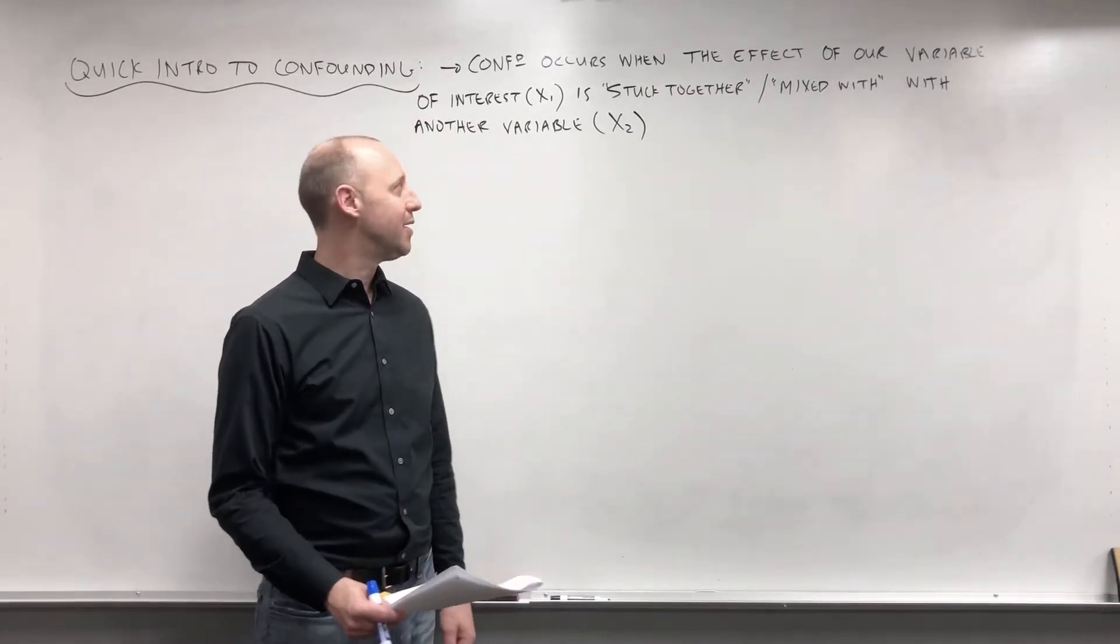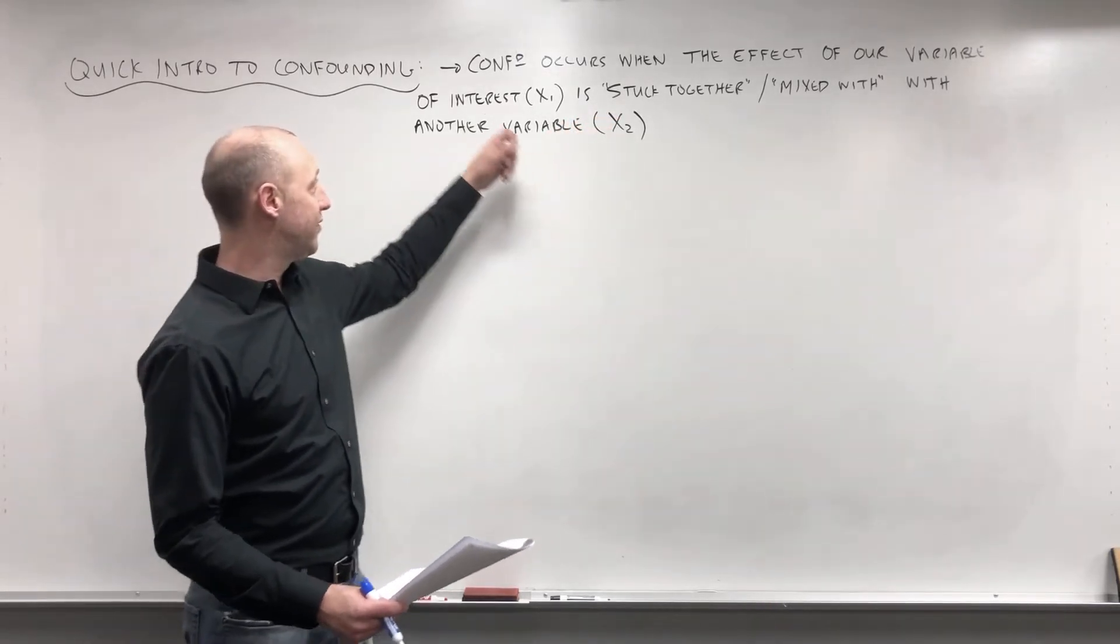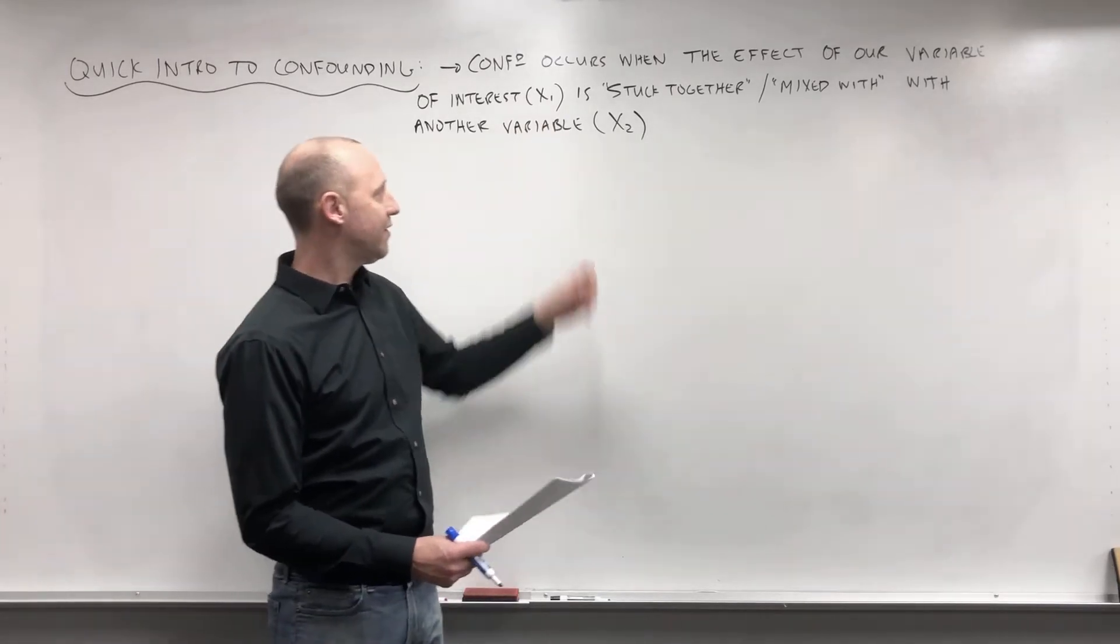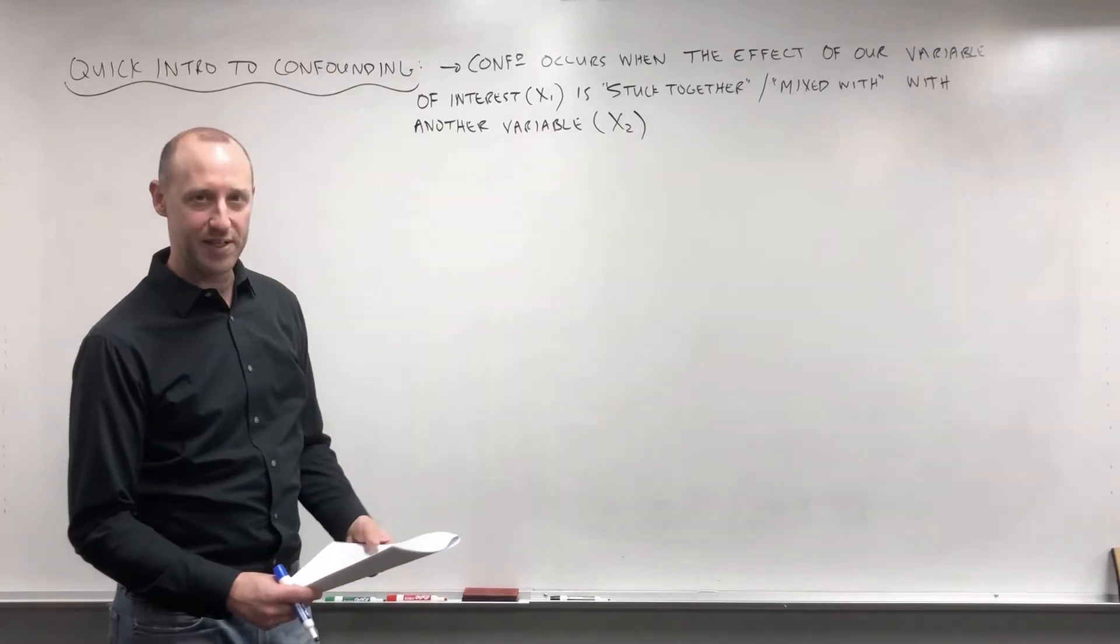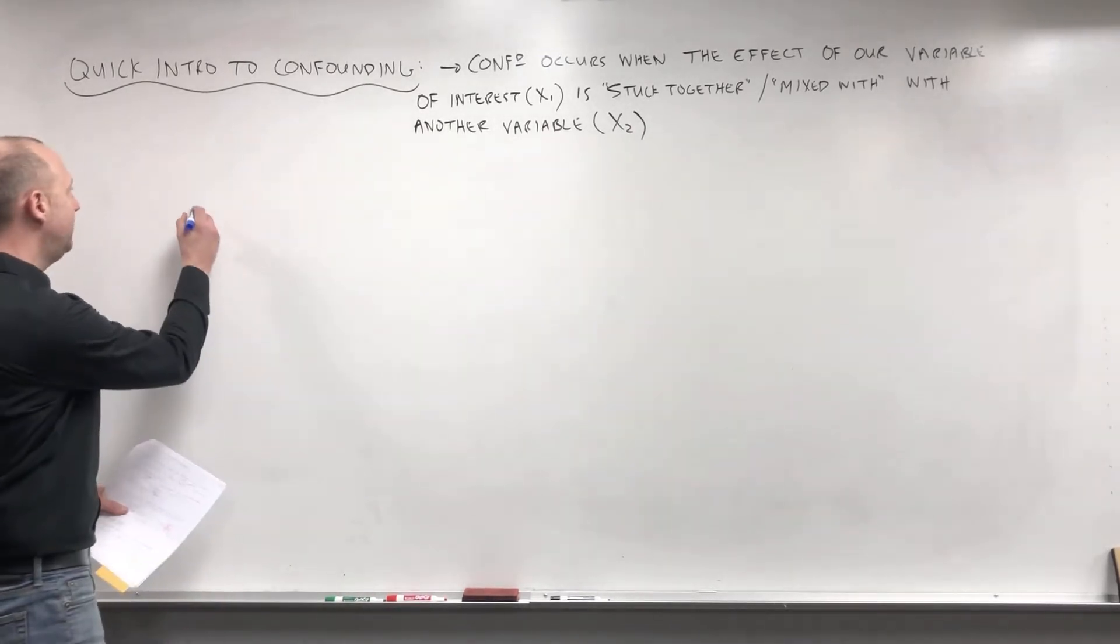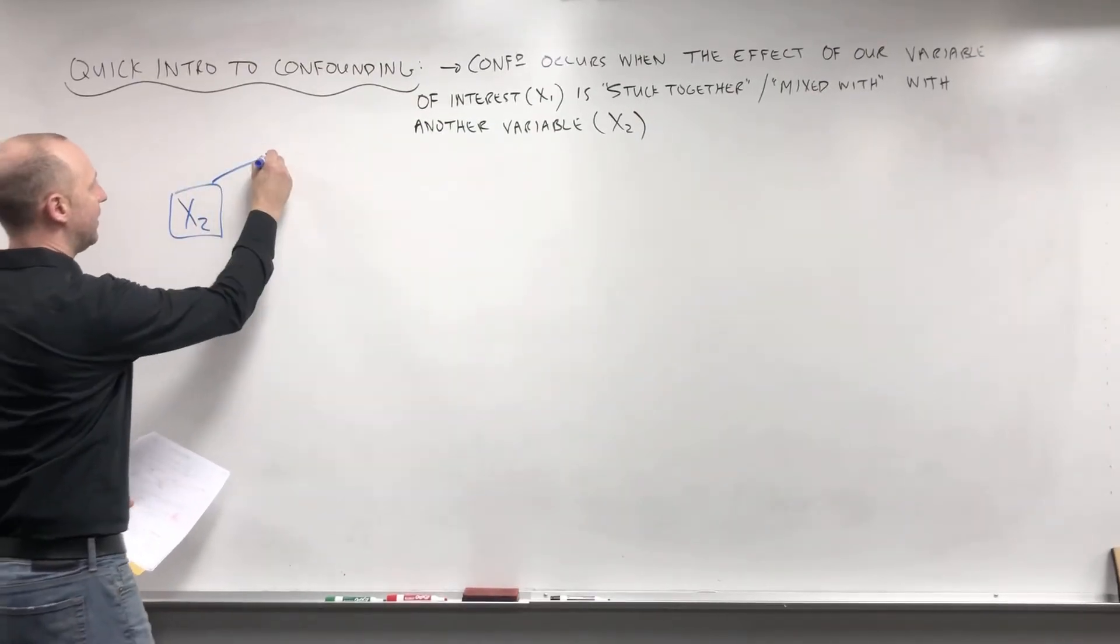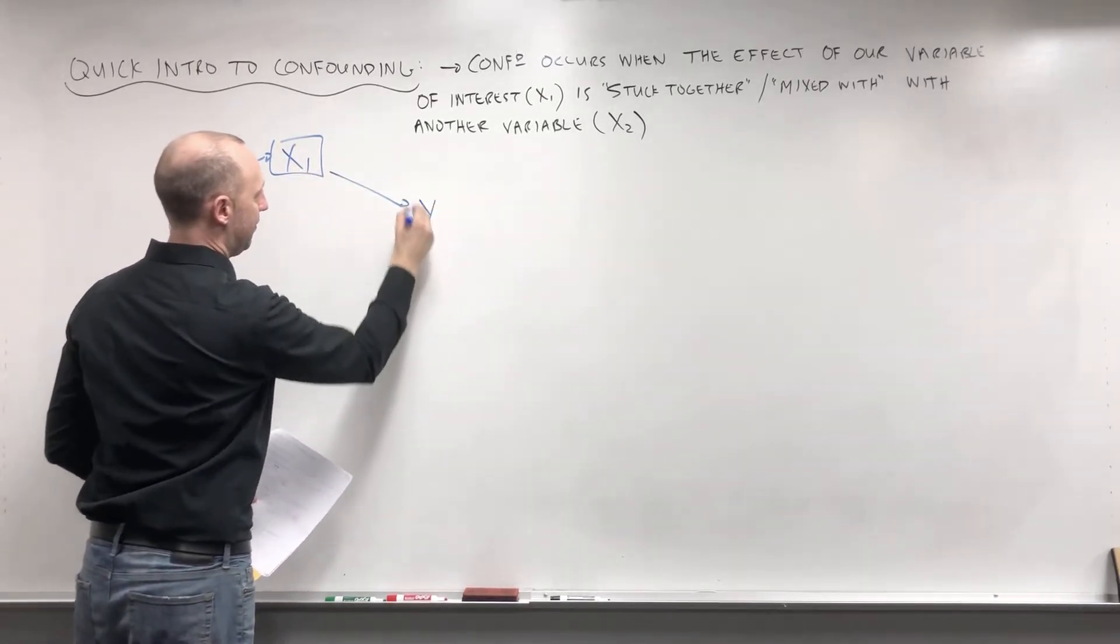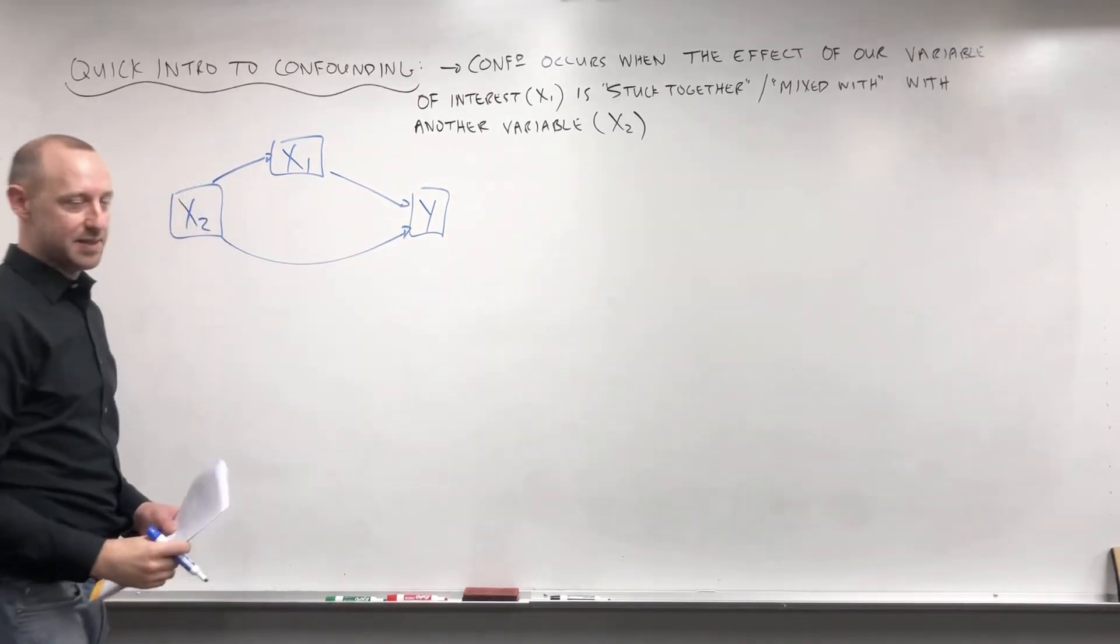But essentially, confounding happens when the effect of our variable of interest—so remember we're using X1 as our variable of interest—when the effect of our variable of interest is stuck together or mixed with or confounded with another variable X2. So the classic diagram, first we'll write it generically: X2 is associated with X1, our variable of interest, and X2 also has some effect on the outcome.